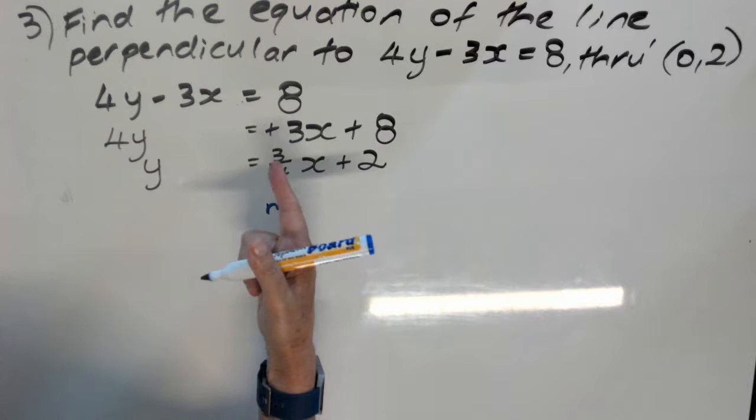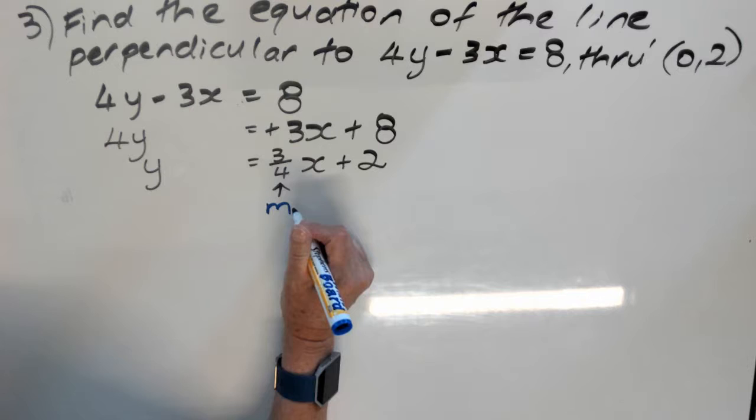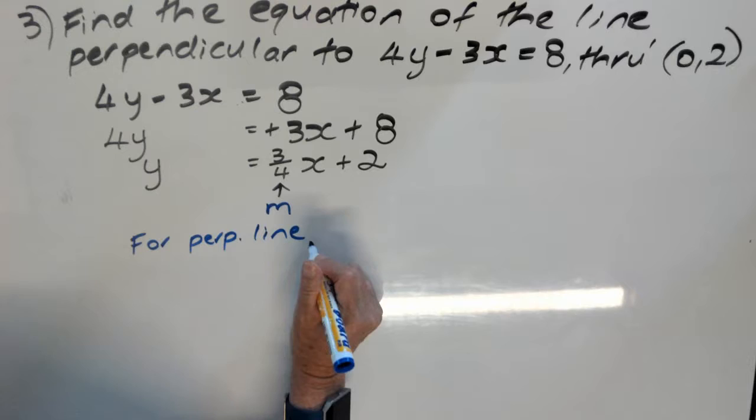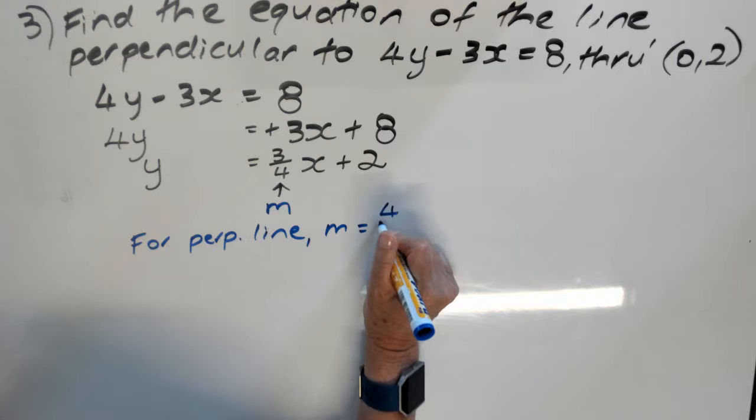When I get a perpendicular line, I have to make the 2 gradients multiply to give negative 1. A quick way to do this is, for the perpendicular line, the gradient will have to be, turn it upside down and make it the opposite sign.